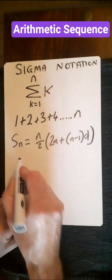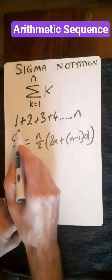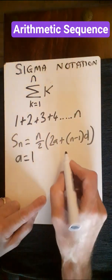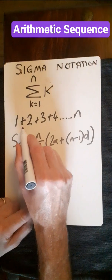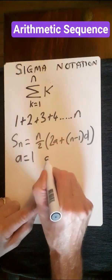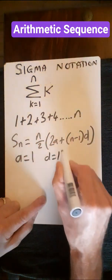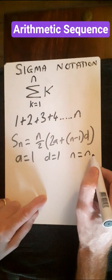And the variable a, that there is the first term, in which case it's 1. d is the common difference, so these have all got a difference of 1. And n is the number of terms, which is just n.